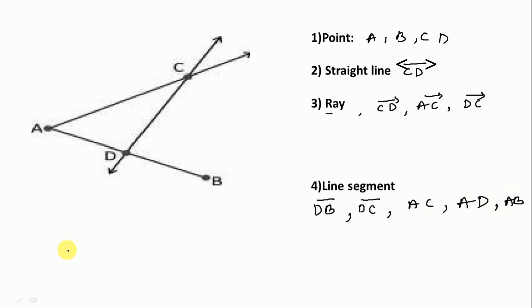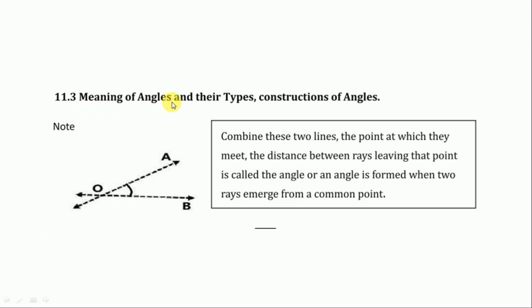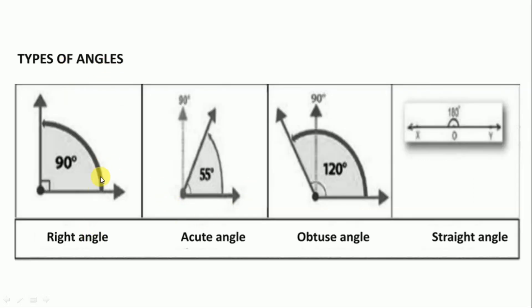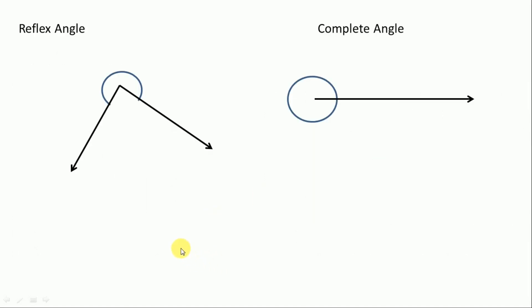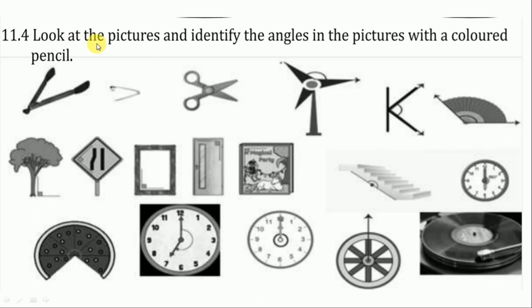The first question of this learning sheet is over. Let's move to the next question, 11.3: meaning of angle and their types, construction of angles. Here a note is given with the concept of angle and types of angles. A right angle is 90 degrees. Less than 90 degrees is called an acute angle. More than 90 degrees is an obtuse angle. A straight line is a straight angle at 180 degrees. More than 180 degrees is a reflex angle. A complete angle is 360 degrees.